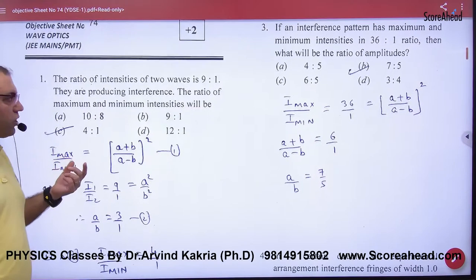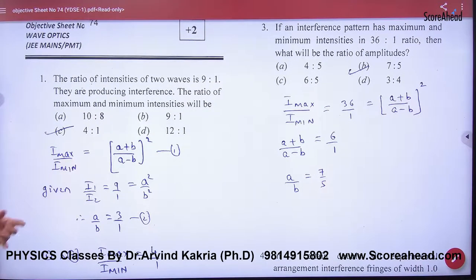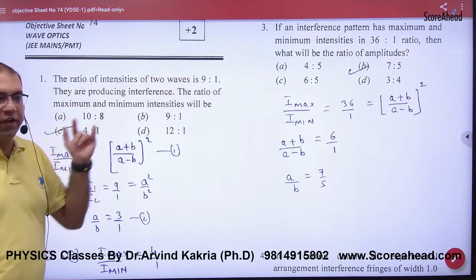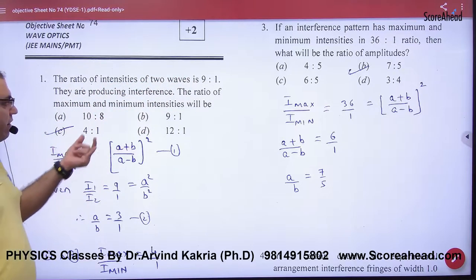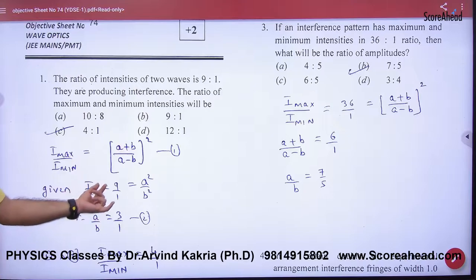Sheet number 74, the question is very neat and amazing. The ratio of intensity of two waves, i1 by i2, is given as 9 is to 1.